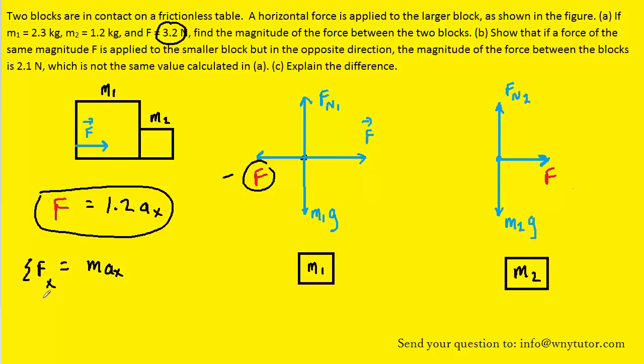Notice that we've plugged 2.3 in for the mass of object 1 because that was stated in the question. Notice also that we can replace this F force right here with 1.2 times the acceleration, which we found earlier when we applied Newton's second law to the second object. So let's make that substitution.